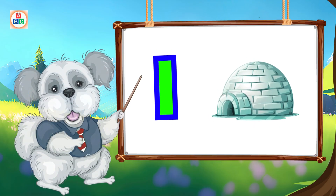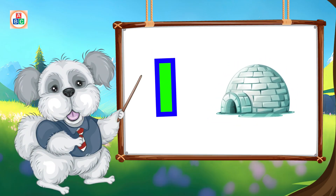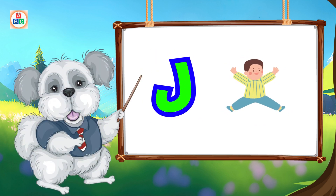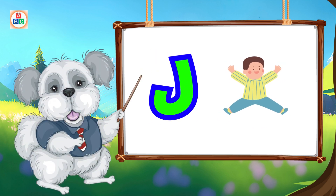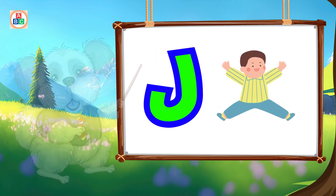I is for igloo, i-i-igloo. J is for jump, j-j-jump.